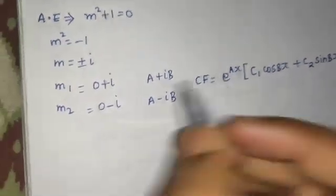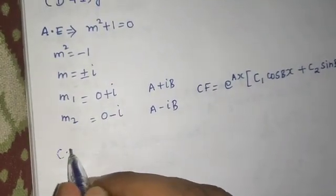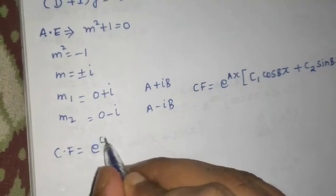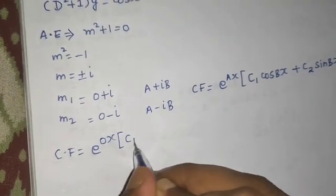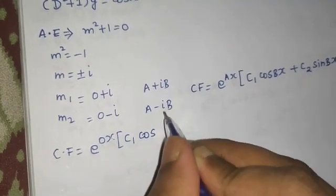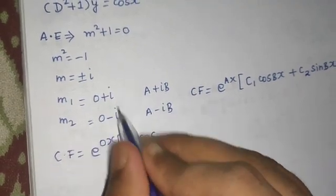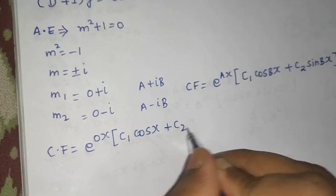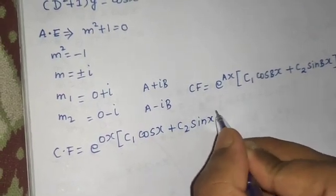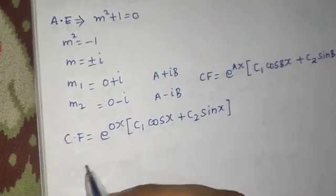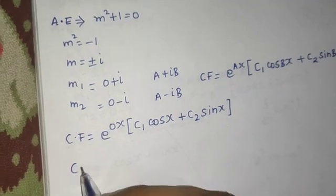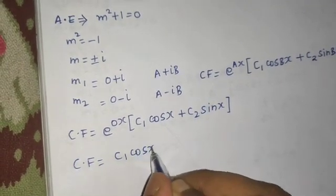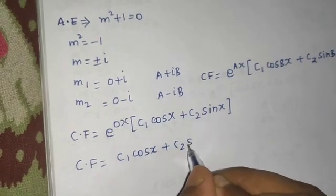We write the complementary function as e^(ax) — here a is zero and b is 1 — so c1 cos(x) plus c2 sin(x). Since e^0 equals 1, your complementary function simplifies to c1 cos(x) plus c2 sin(x). Two steps have been completed.